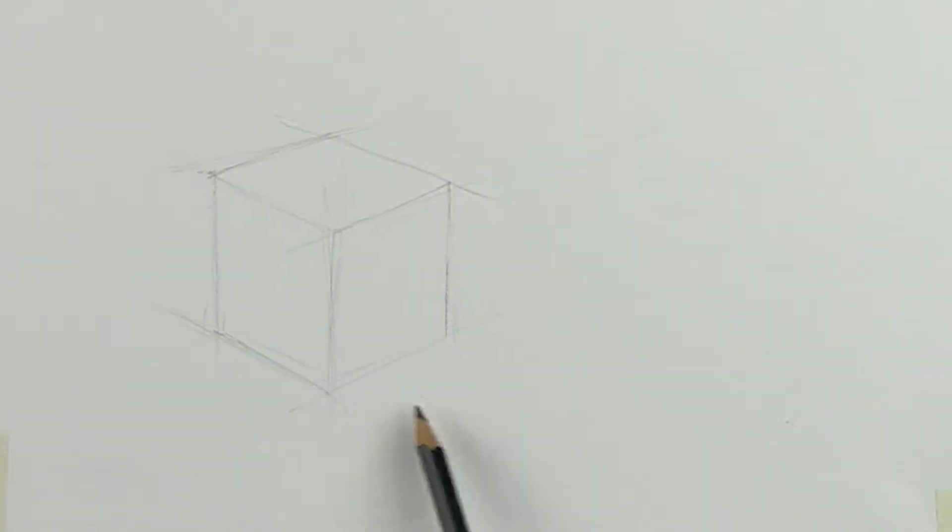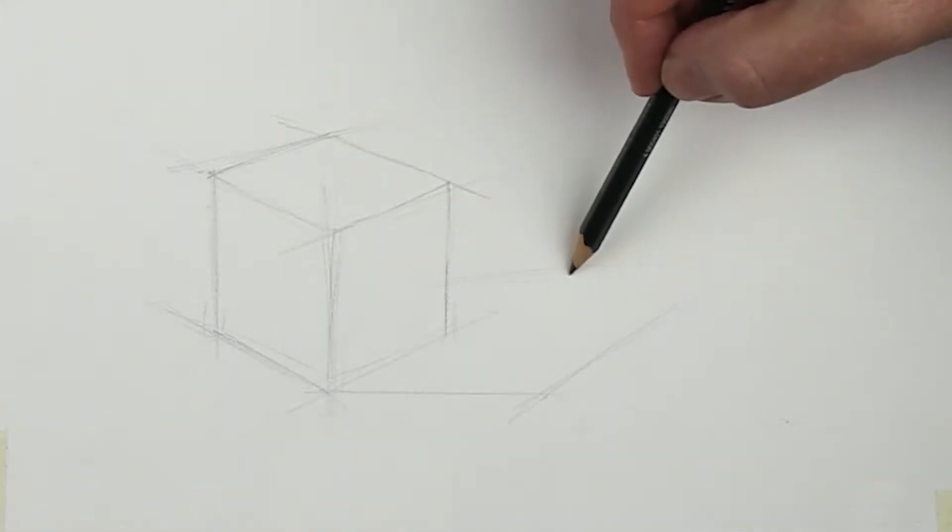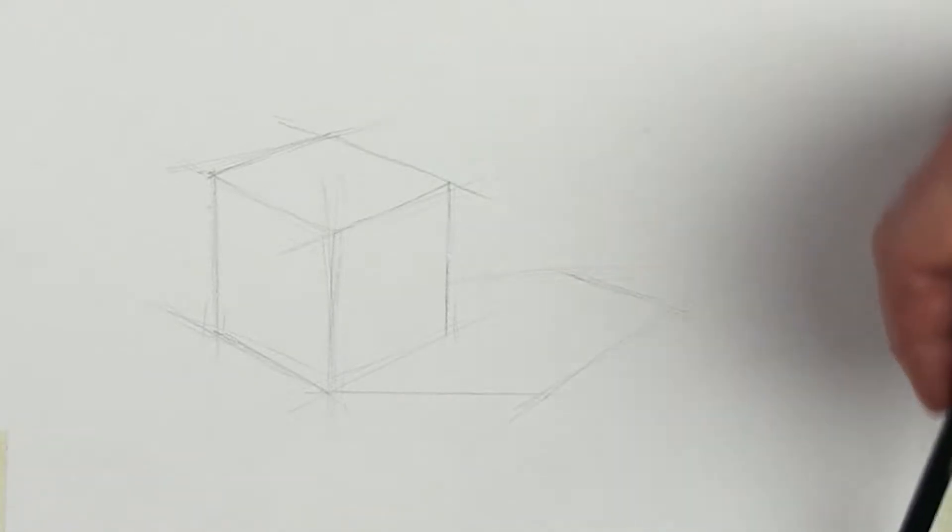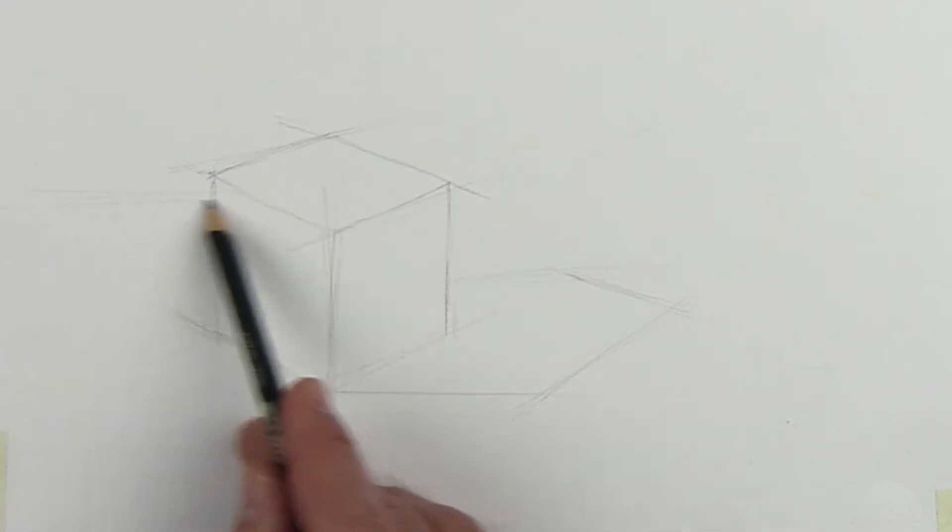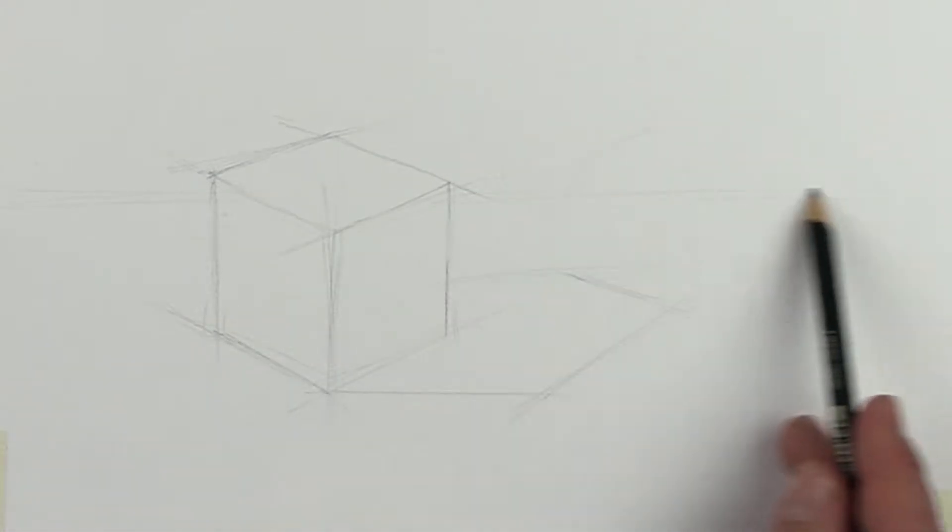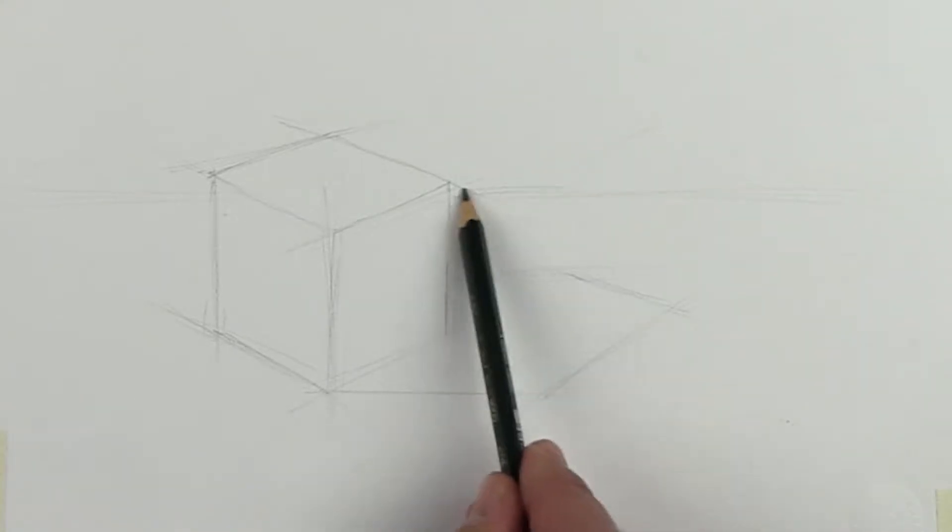I also sketch in the edges of the cast shadow. There is a way to draw this accurately using a little bit of linear perspective, but I'm going to save that for another demonstration. I also add a very light horizon line and then I begin to shade. The reason for the horizon line is to add a little background shading, especially behind the top of the cube so that it stands out.